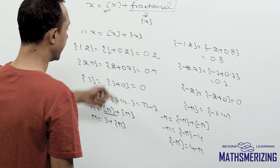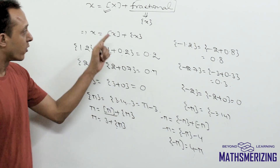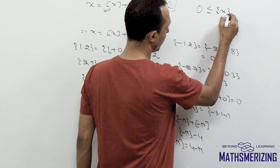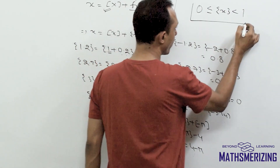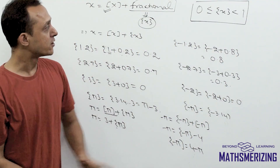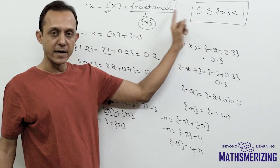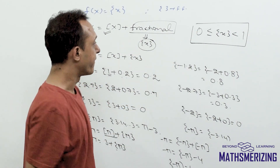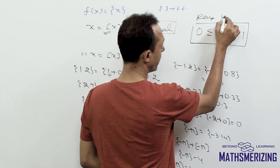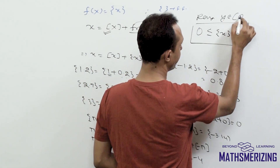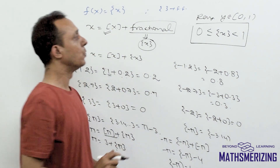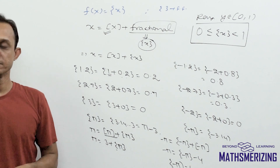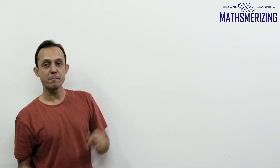This is how we define the fractional part function. Clearly, from the definition, the fractional part function always lies between 0 and 1 — it should be non-negative and always less than 1. It cannot take a negative value and cannot be 1 or greater than 1. So the range of the fractional part function is [0, 1). Now let's draw the graph of the fractional part function.